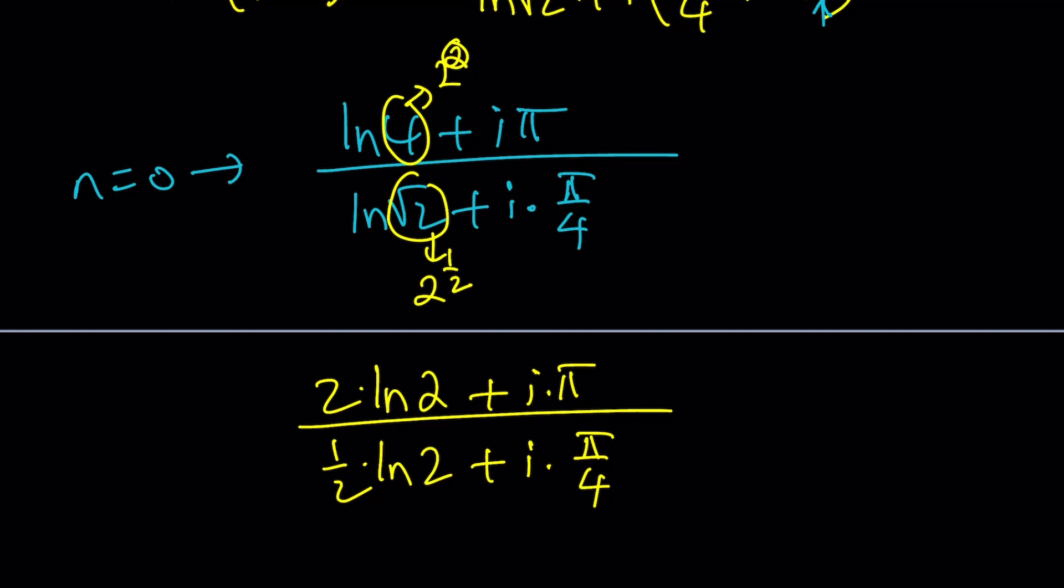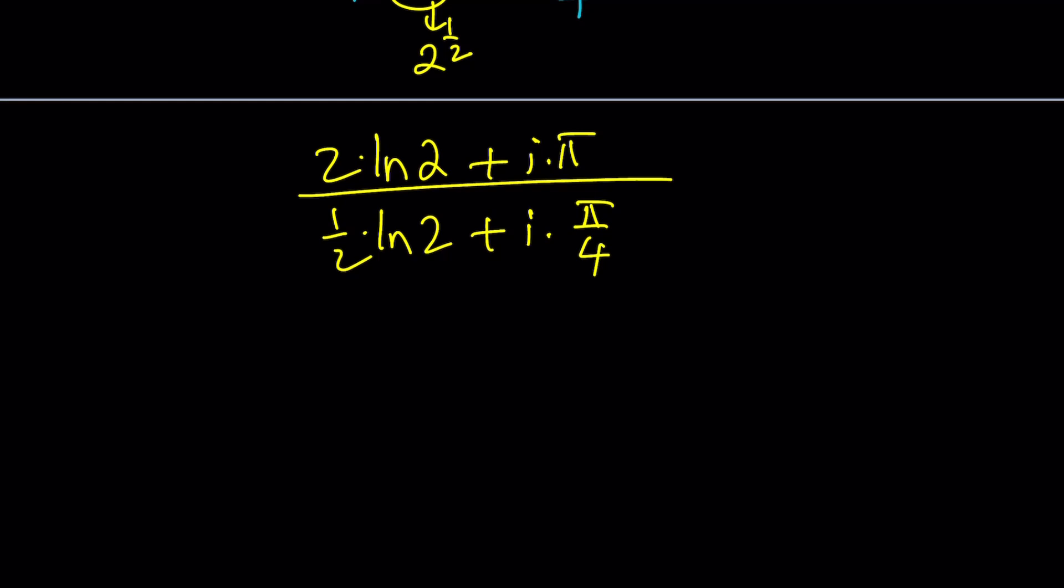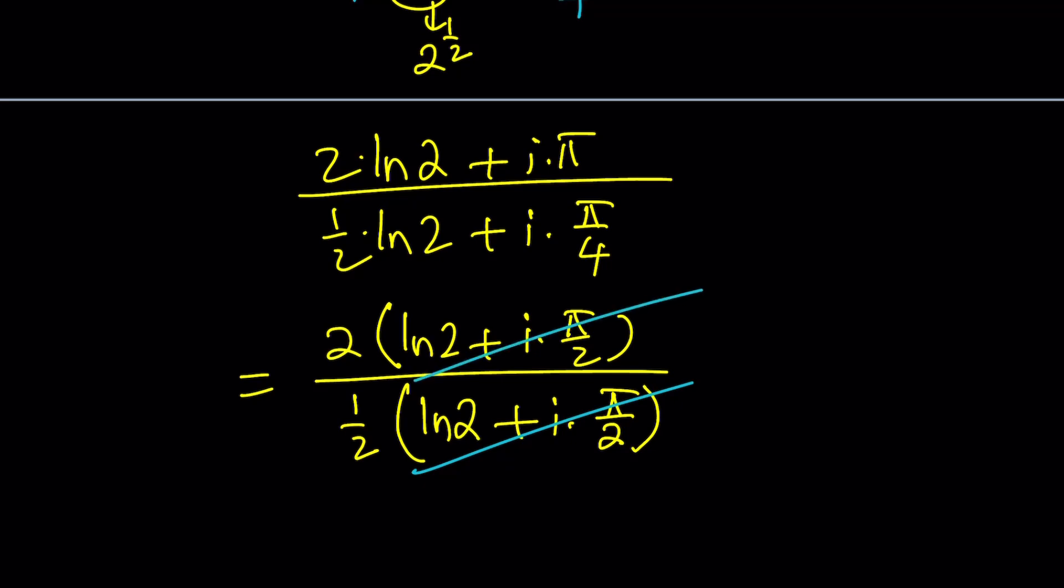Again, how do we simplify this? Good question, right? Here's what we're going to do. In order to be able to simplify this, we're going to take out a 2 in the numerator. It's going to give us ln 2 plus i times pi over 2. And at the bottom, we're going to factor out a 1 half so that we can start with ln 2. I want the real parts to be equal. Get the idea? Plus, and magically, this needs to be i times pi over 2. And guess what? They're going to cancel out. Yes. Awesome, right? Super nice.